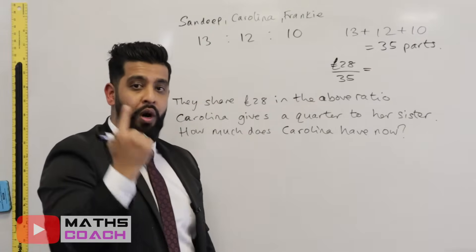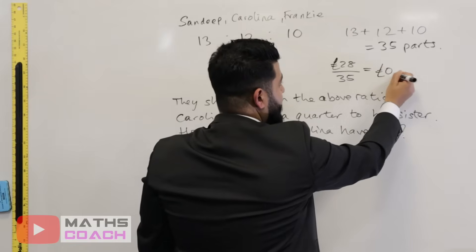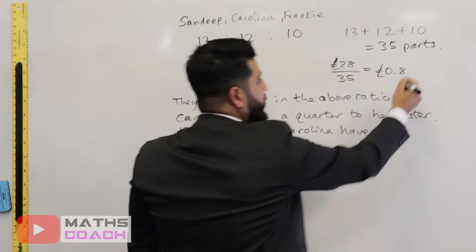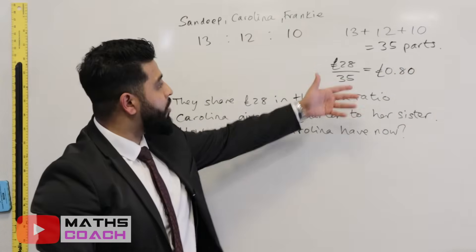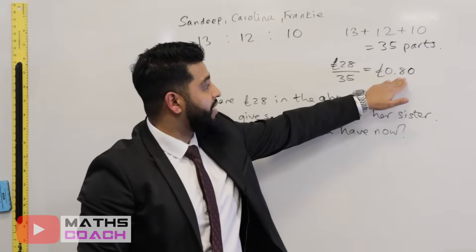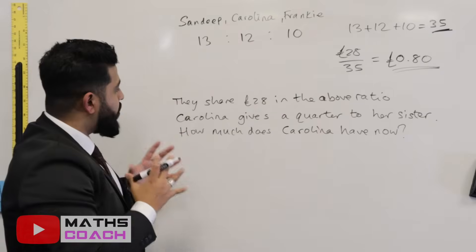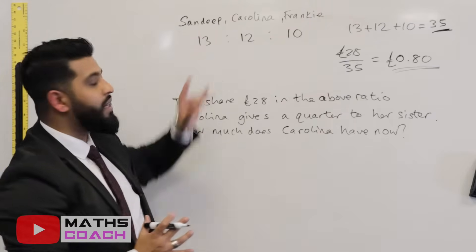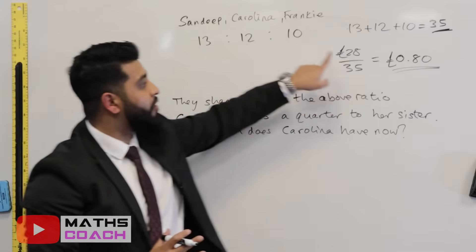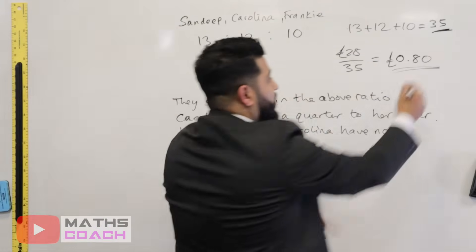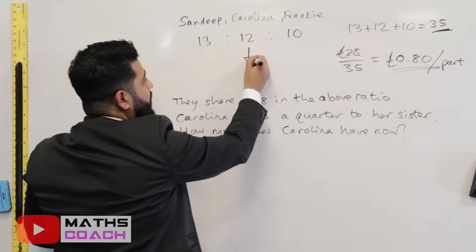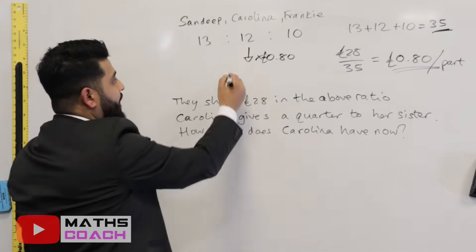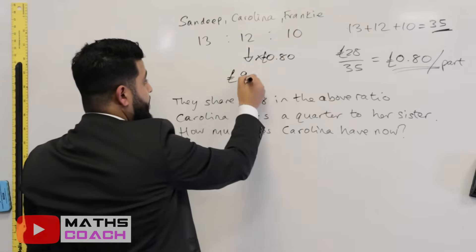...plus 10 equals 35 parts. We divide 28 pounds by 35, and the answer is 0.8 — that's 80 pence, or £0.80 per part. The question focuses on Carolina. She has 12 parts, so we multiply: 12 times 0.80. Using a calculator, Carolina gets nine pounds sixty — that is her share of 28 pounds.